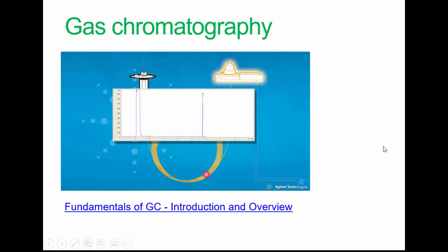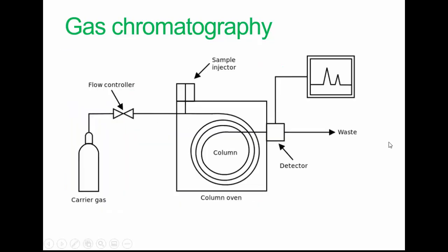This is the schematic of the system. The carrier gas I mentioned must be chemically inert. Commonly used gases include nitrogen, helium, argon, and carbon dioxide. The choice of carrier gas is often dependent on the type of detector which is used. The carrier gas system also often contains a molecular sieve to remove water and other impurities. Now a molecular sieve is a material with pores of uniform size. These pore diameters are similar to small molecules, which will pass through but prevent larger molecules passing through.